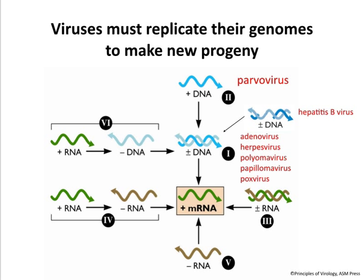We'll talk about that in another lecture. So we're going to talk about how parvoviruses and some of these other viruses replicate their genomes to make new progeny, because obviously a virus infects the cell and it needs to make more progeny — it has to replicate its genome. So we're going to talk about adenoviruses, herpesviruses, polyomaviruses, and the highly related papillomaviruses, and poxviruses.